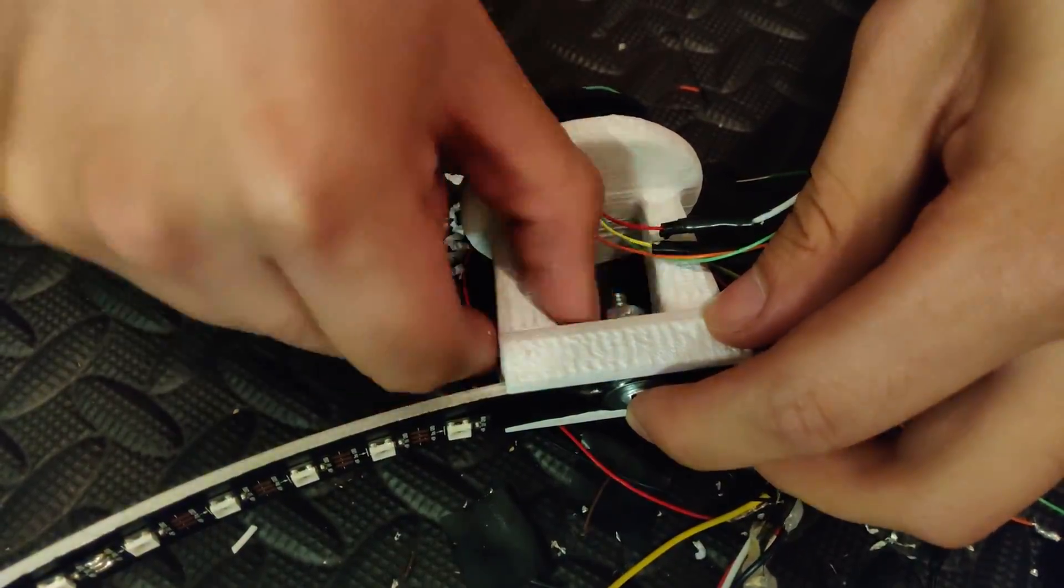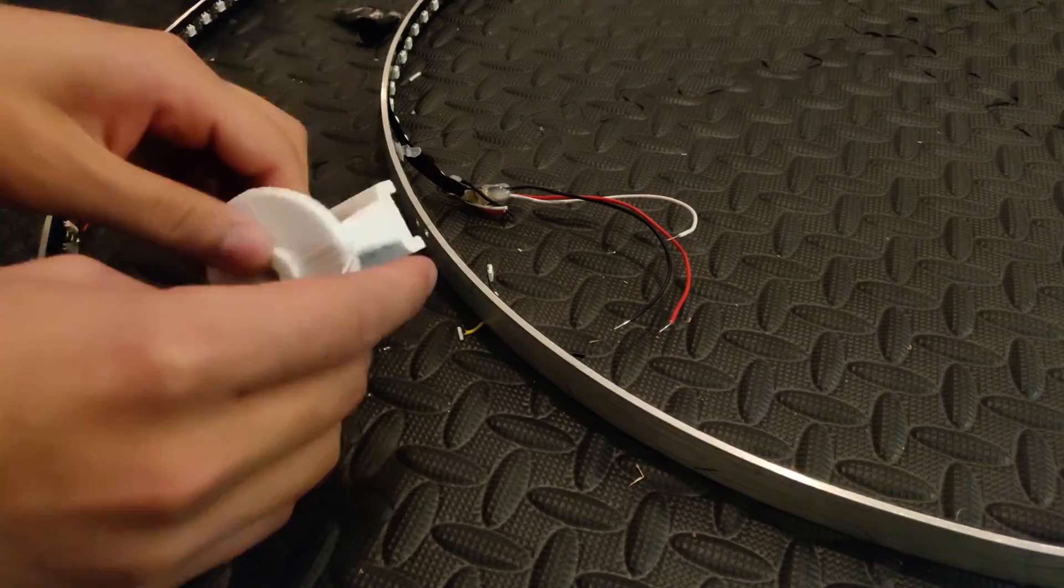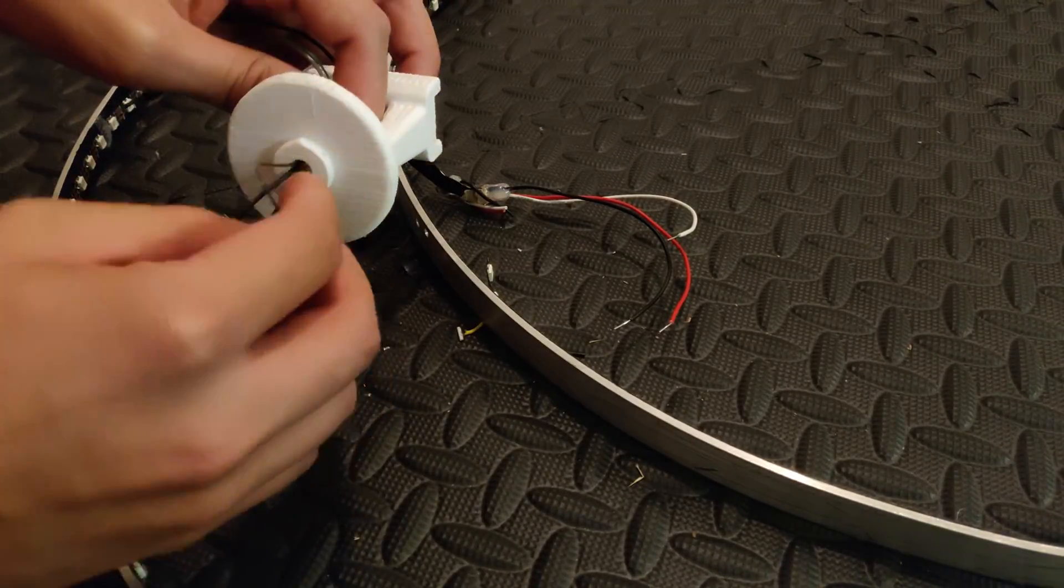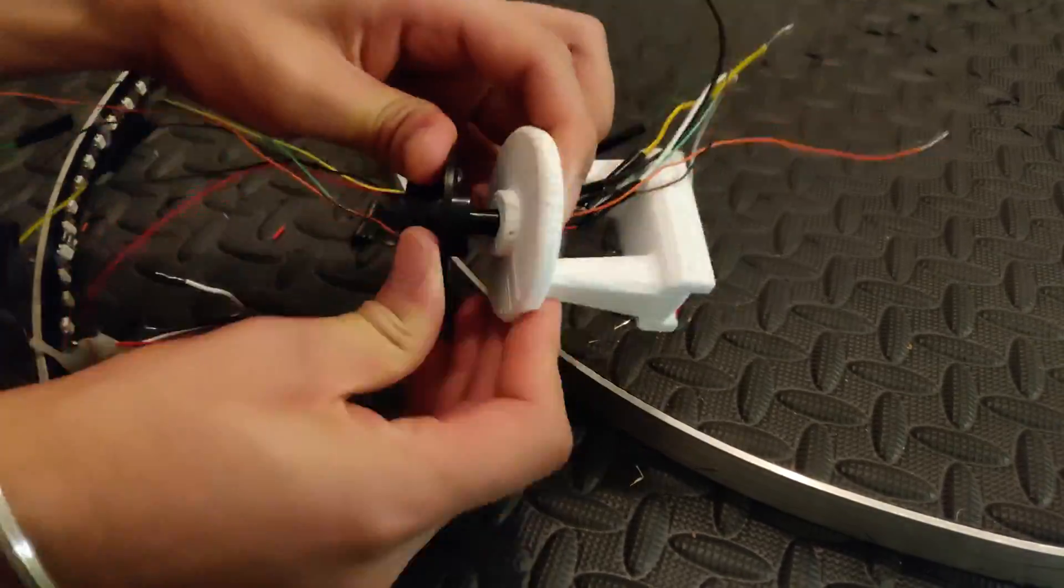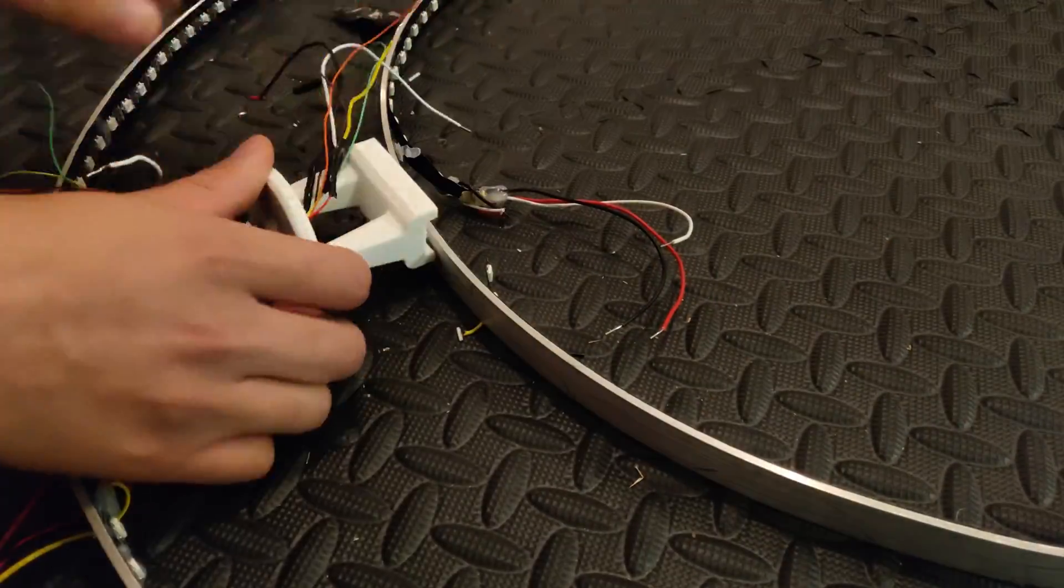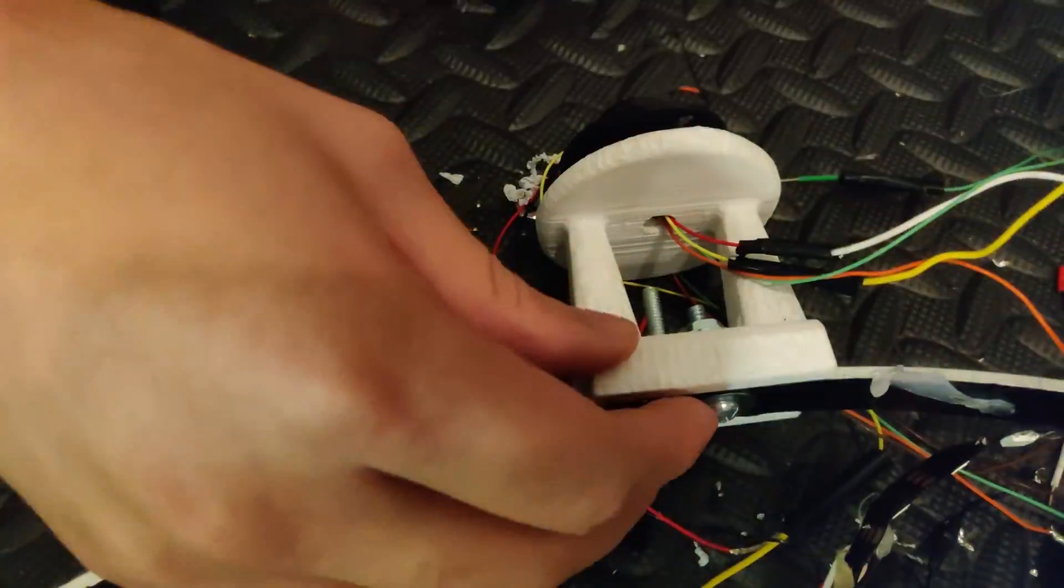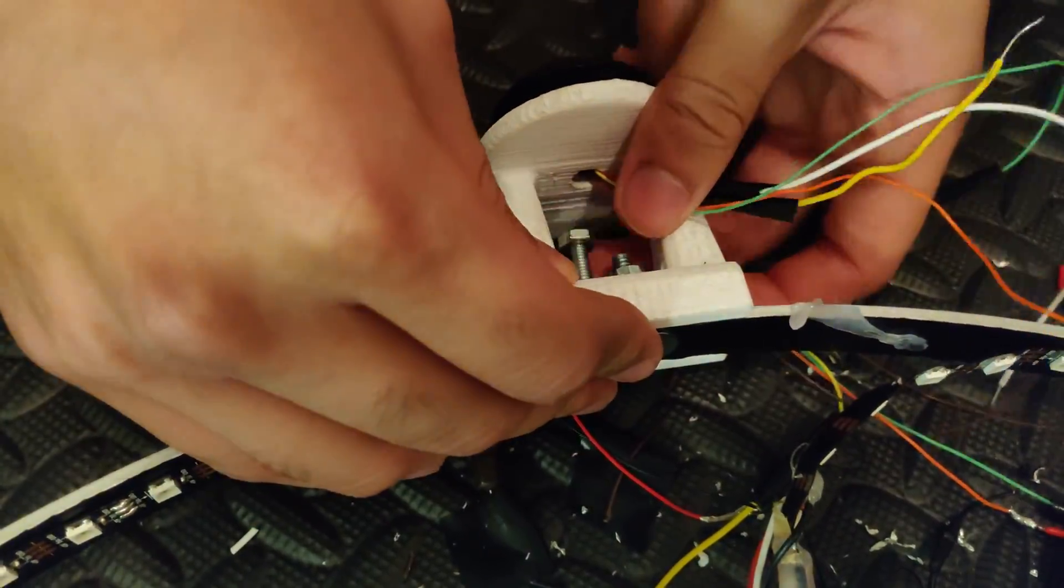So the first step was drilling the holes and then putting in the nuts and bolts to mount the brackets of the slip ring. Once the brackets were attached to the rings we could run the wires from the slip ring through the holes and then mount the slip ring into the brackets.